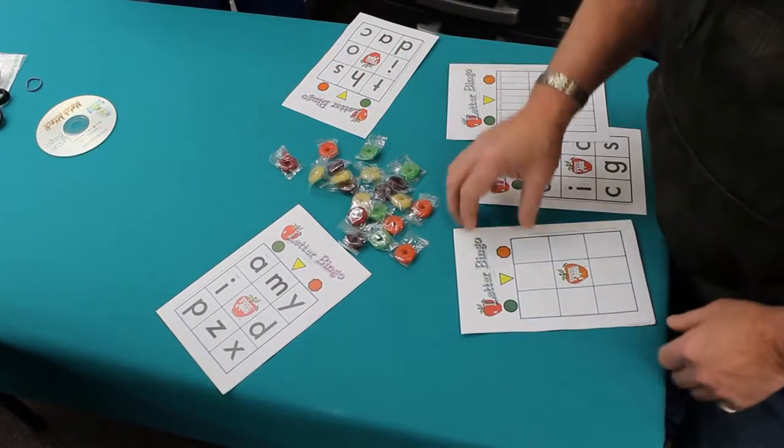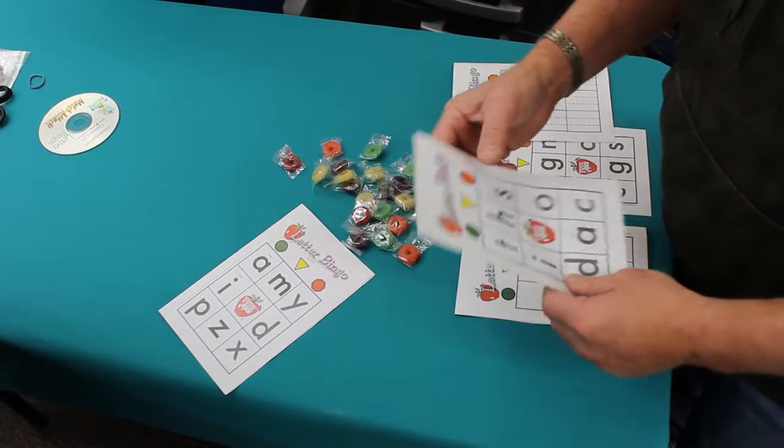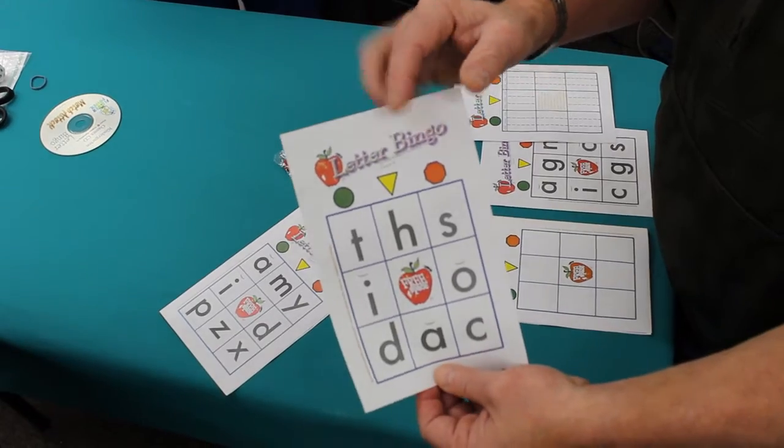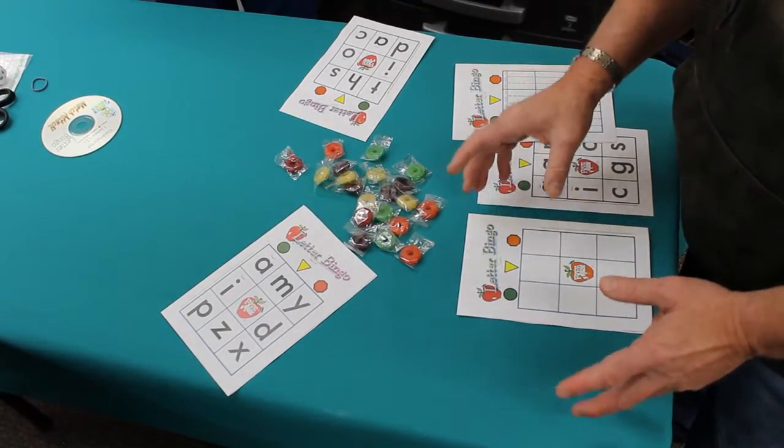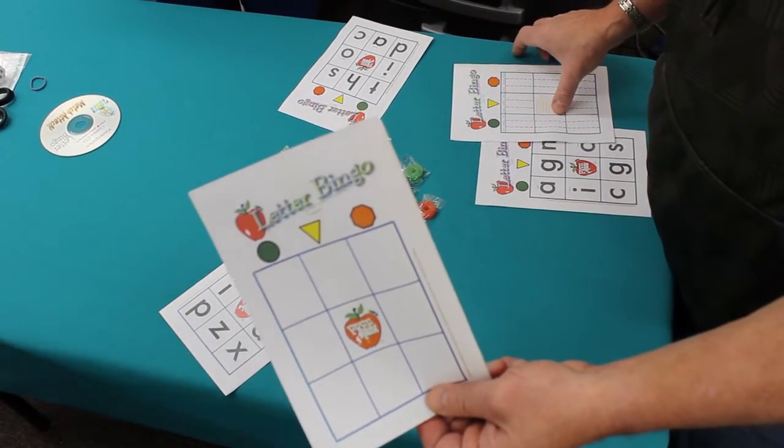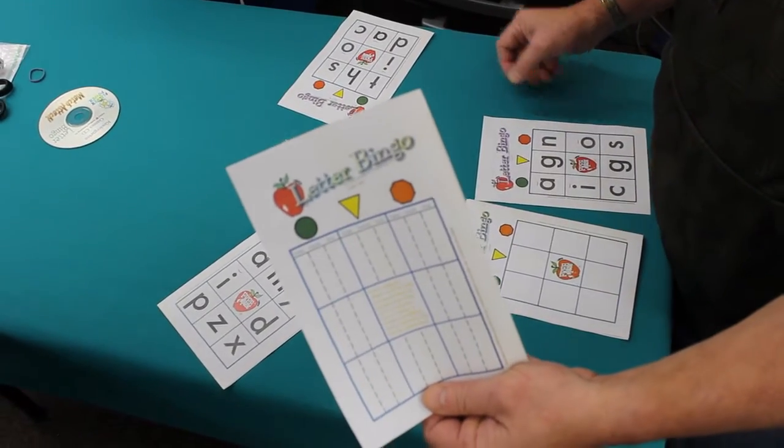One of them is letter bingo. Basically, there are like 55 to 60 different cards that look something like this. They're all random so no cards are the same. On the flash drive there's a blank template so if you want to do specific letters you can do that. There's also a caller sheet to help you keep track of what letters you've called.